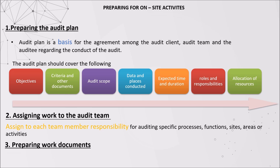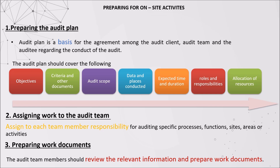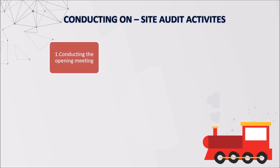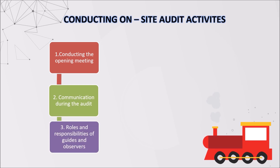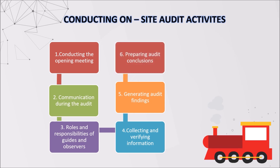The final step about preparation is to prepare the work documents. The audit team members should review the relevant information and prepare work documents. Our on-site audit activities shall begin with conducting the opening meetings and communication during the audit. Next, roles and responsibilities of guides and observers will be clarified. After collecting and verifying information, we are able to generate audit findings and prepare the audit conclusions. Finally, we are able to conduct the closing meeting about our audit activities.